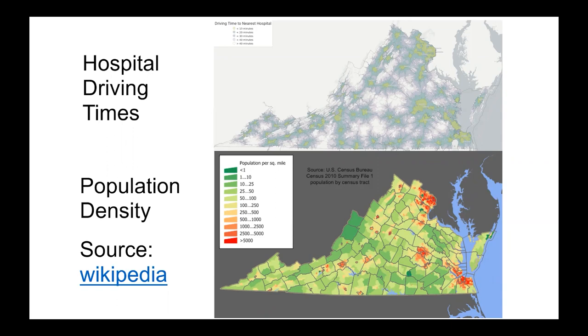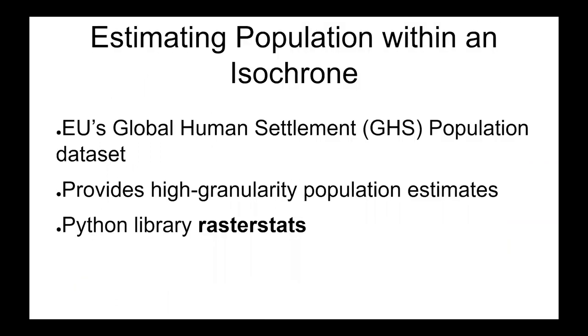For this project, I realized it was important to account for population density to get a more accurate picture. To do this, I used the EU's Global Human Population dataset, which provides estimates of population across the entire world at 100-meter resolution. I then used the Python library rasterstats to estimate the total population within an arbitrary polygon — in this case, each isochrone contour. The resulting data looks like a heat map with hotspots for cities.